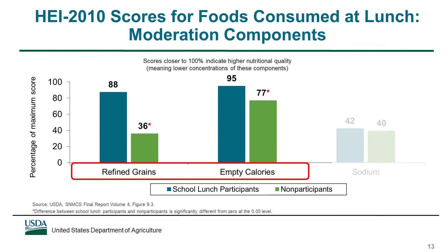There were also significant differences between participants and non-participants in scores for two of the moderation components. For these components, higher scores mean lower concentrations of refined grains, empty calories, and sodium in students' lunches. The lunches consumed by participants received significantly higher scores for refined grains and empty calories than the lunches consumed by non-participants, indicating that the concentrations of these components were lower in participants' lunches. Scores for sodium were similar for both groups of students.